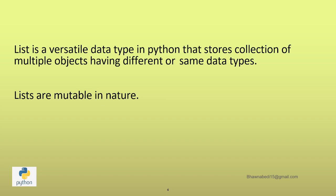We will move to PyCharm and see how to create lists and what functions we can use with the list. List is a versatile data type in Python that stores a collection of multiple objects — it can store integers, strings, decimals, and even another list inside it. It can store same or different types of objects. Lists are mutable in nature — they can be changed.